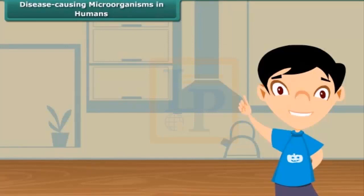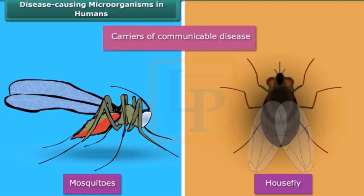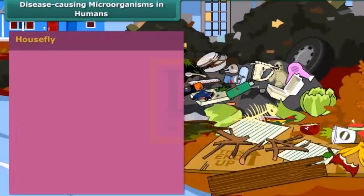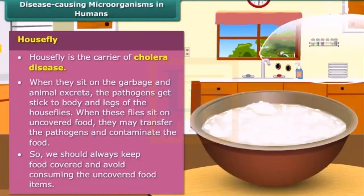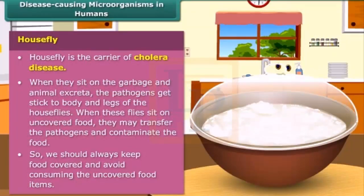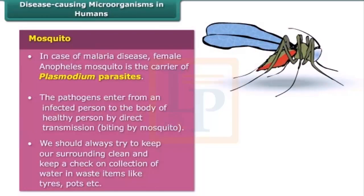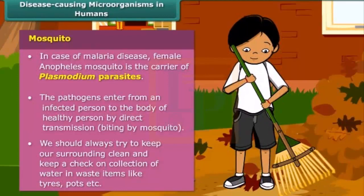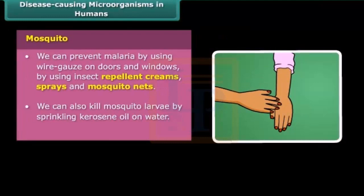Friends, some insects and animals that are found in our surroundings act as carriers of pathogens. Housefly and mosquitoes are common examples of such carriers. In cholera disease, the housefly is the carrier of many pathogens. To prevent cholera, we should always keep food covered and avoid consuming uncovered food items. In malaria disease, the female Anopheles mosquito is the carrier of Plasmodium parasites. We should use repellent creams, sprays and mosquito nets to prevent malaria.